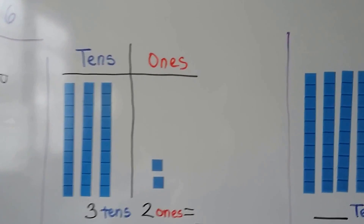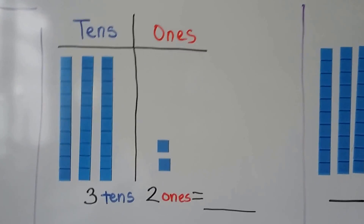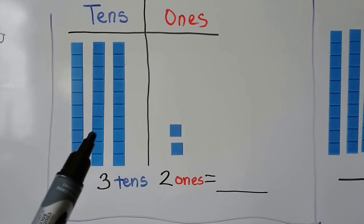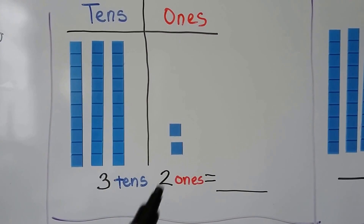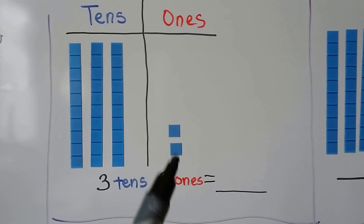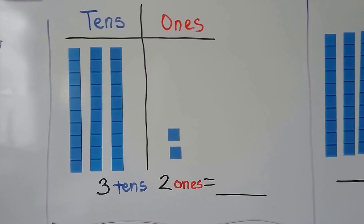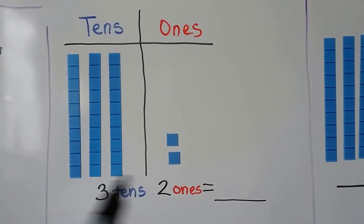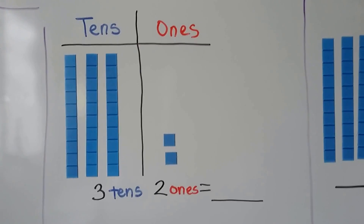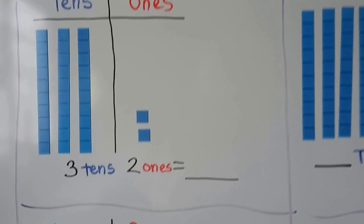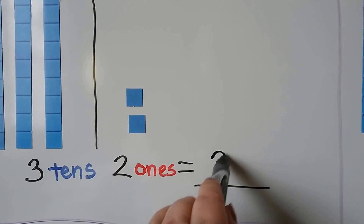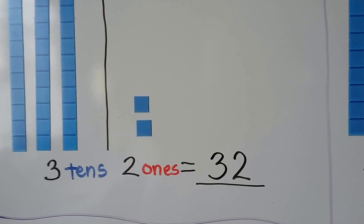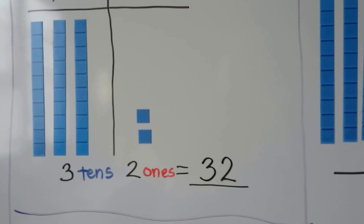Here we have tens and ones. We have one, two, three tens, and we have two ones. We can write the number this represents. There's a three in the tens place and a two in the ones place. 32.